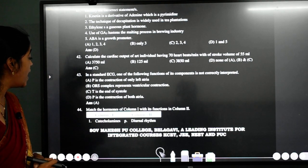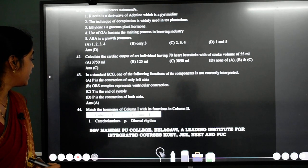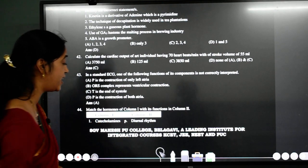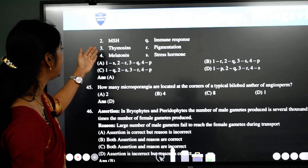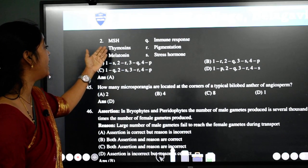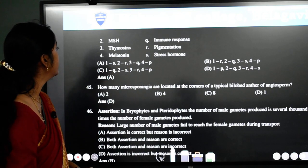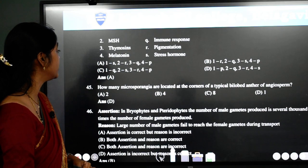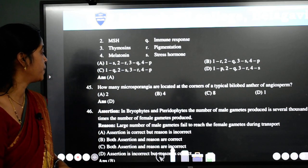Next one, match the hormones of column 1 with its function in column 2. Catecholamine student, it is a stress hormone. Let us continue with the next slide. MSH is melanocyte stimulating hormone. Here it is for pigmentation. Thymosin is for immune response. And melatonin is for circadian rhythm. So answer here is A.